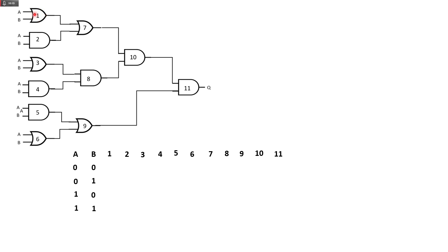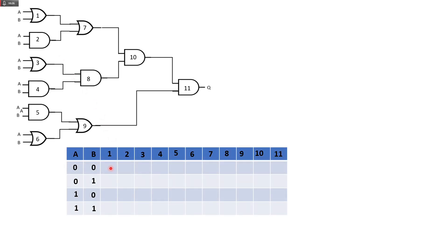Gate 1 is an OR gate with inputs from A and B. So: 0 or 0 is 0, 0 or 1 is 1, 1 or 0 is 1, 1 or 1 is 1. Gate 2 is an AND gate: 0, 0, 0, 1. Gate 3 is an OR gate — same as gate 1: 0, 1, 1, 1. Gate 4 is an AND gate — same as gate 2: 0, 0, 0, 1.